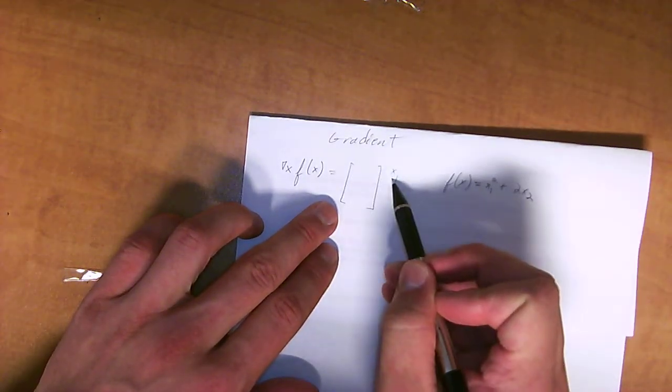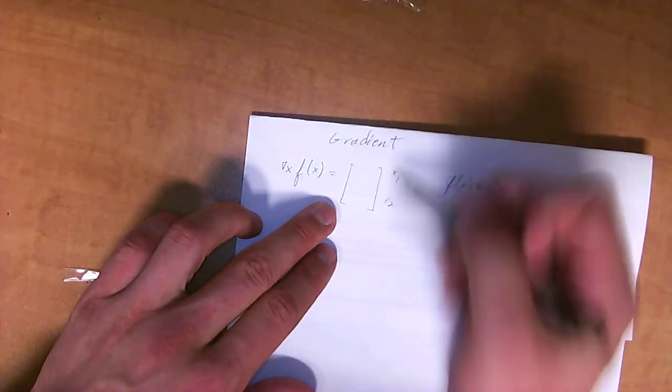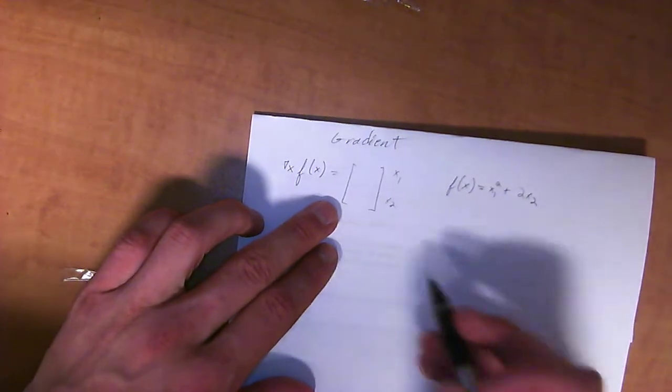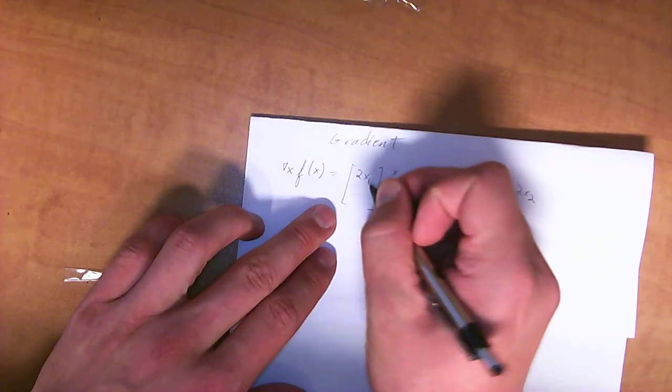So the partial with respect to x₁ is just 2x₁, which is pretty simple. And then if you take the partial derivative of 2x₂, the partial with respect to x₂, then you get 2.